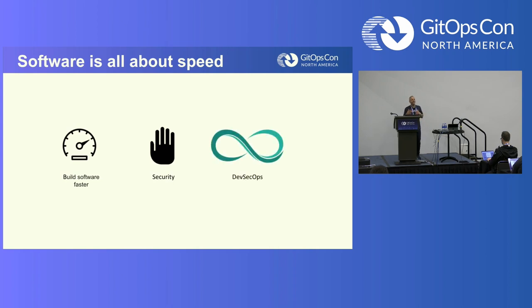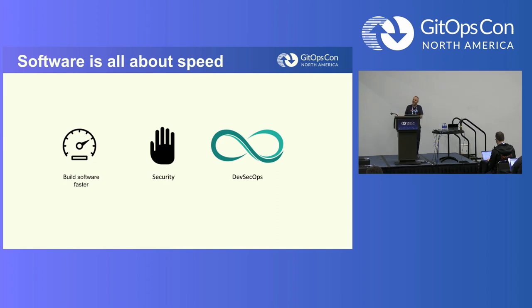This is why DevSecOps as a concept emerged — basically putting security at the heart of DevOps without compromising. Let's not compromise, let's optimize. Let's optimize speed, let's optimize security. Eventually, what we'll gain is a speedy and secure pipeline.